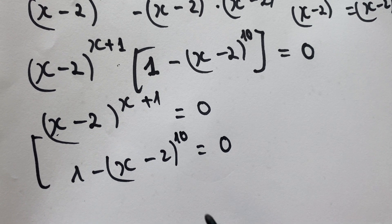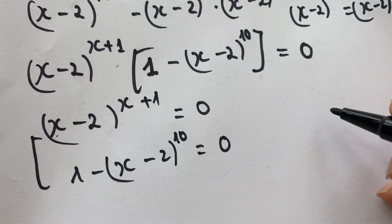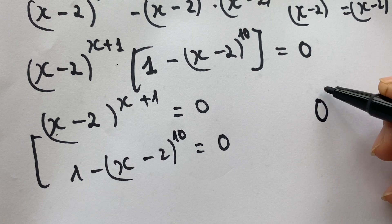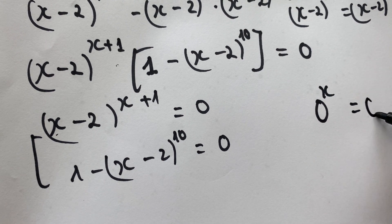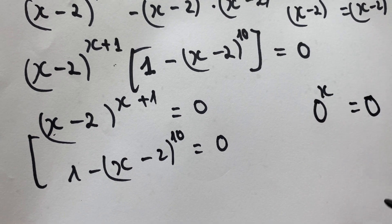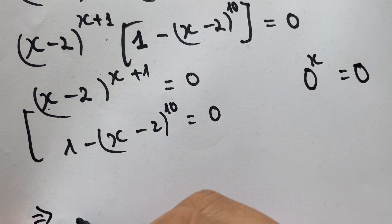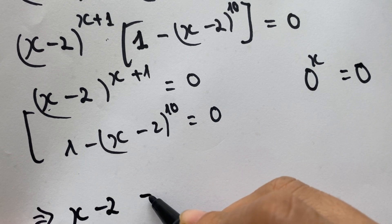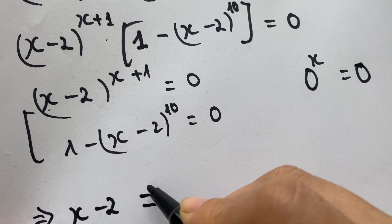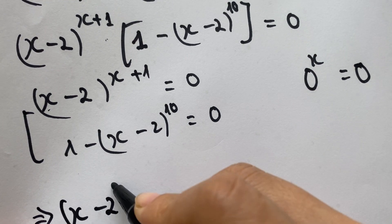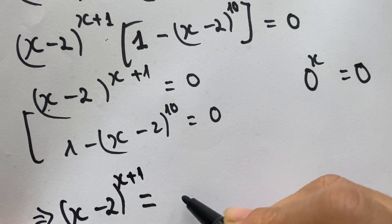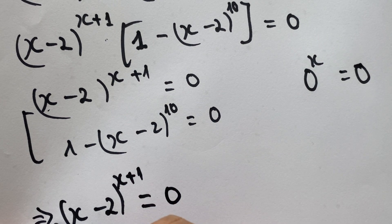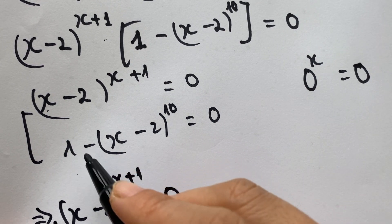In the exponent rule, we have 0 to the power x equals 0. Therefore, x minus 2 equals 0, which gives us x equals 2. And for the second case, we move 1 to the right hand side.